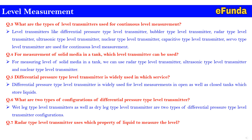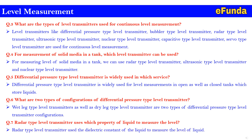Question 7: Radar type level transmitter uses which property of a liquid to measure the level? Radar type level transmitter uses the dielectric constant of a liquid to measure the level. For detailed answers, please visit our playlist on engineering where level measurement is covered as a separate playlist with details of each type of level transmitter.